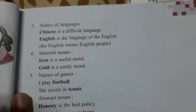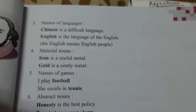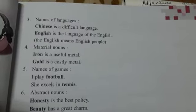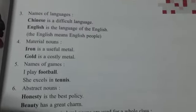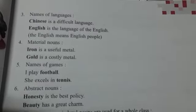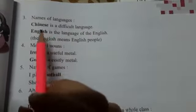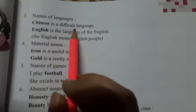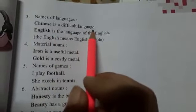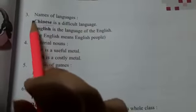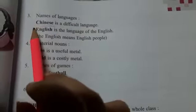Next is names of languages. Jo languages ke name hain — for example, Chinese, Indian, English, French — with them also we will not use any article. For example, 'Chinese is a difficult language.' With Chinese we haven't used any article.